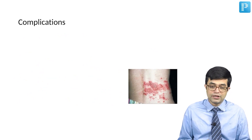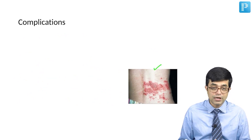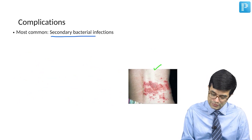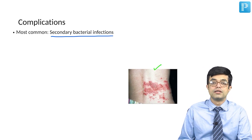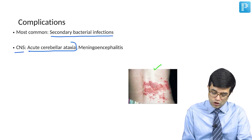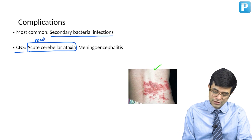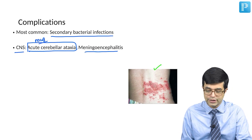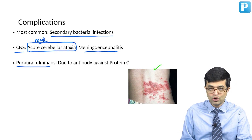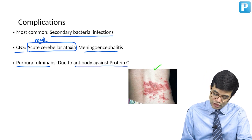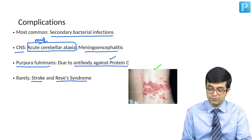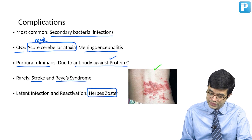Moving to complications: the most common complication of chickenpox is secondary bacterial infections, mainly involving gram-positive bacteria like Staphylococcus aureus and Streptococcus pyogenes. CNS complications are also common; the most notable is acute cerebellar ataxia, which has been asked in MCQs. Patients can also develop meningoencephalitis. Purpura fulminans can develop, in which large purpuric bullae are present over the body, occurring due to antibodies against protein C. Rarely, stroke and Reye's syndrome can develop.